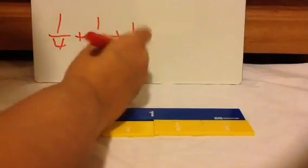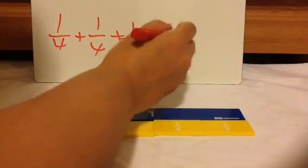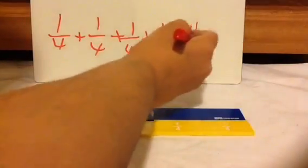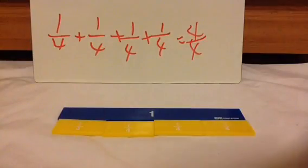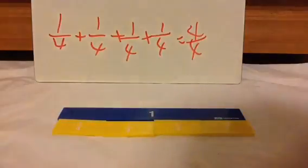1 fourth plus 1 fourth plus 1 fourth plus 1 fourth equals 4 fourths. Notice again, you add the top number, but you do not add the bottom number because this is still in fourths.